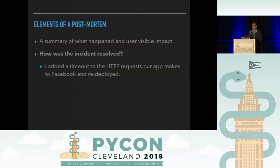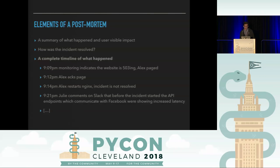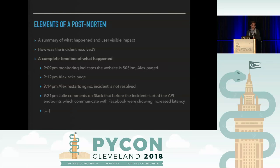Second element: how was the incident resolved? Example: 'I added a timeout to the HTTP requests our app makes to Facebook and redeployed the application.' You did something in the moment to make the bleeding stop — what was it? Third element: a complete timeline of what happened. For example: 9:09, monitoring indicates the website is 503, Alex paged. 9:12, Alex acks the page. 9:14, Alex restarts NGINX, incident not resolved. 9:21, Julie comments on Slack that before the instance started, the API endpoints communicating with Facebook were showing increased latency.